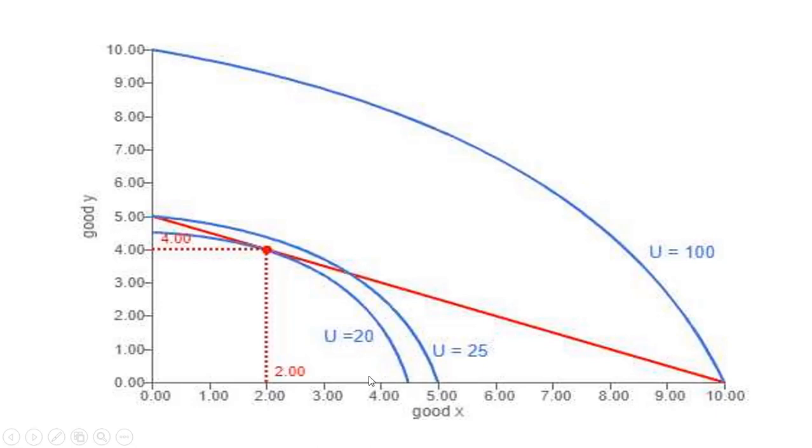And what we first did, we found where the concave indifference curve was tangent to our budget constraint, and we found y was 4 and x was 2, and that gave us a utility of 20.